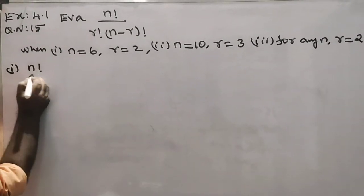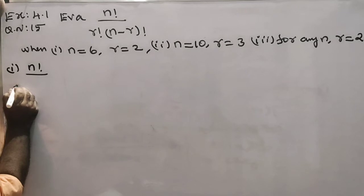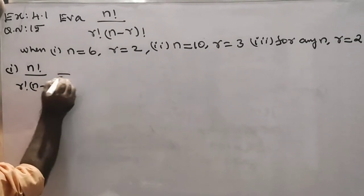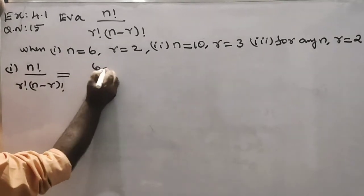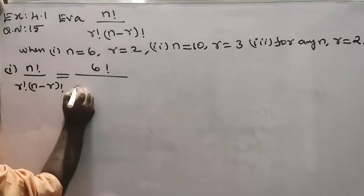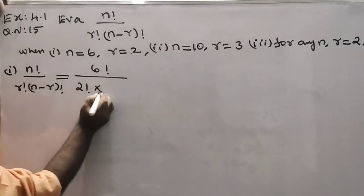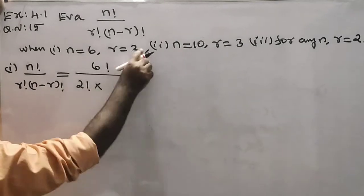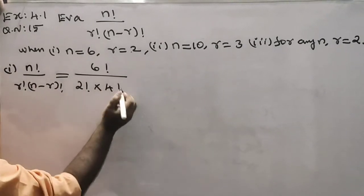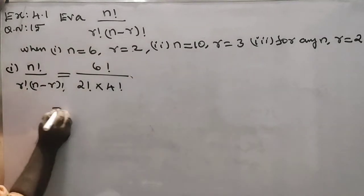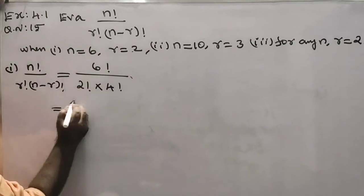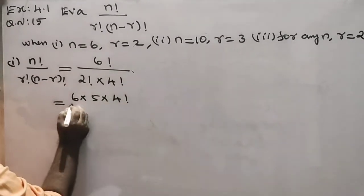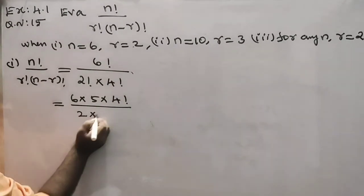n factorial divided by r factorial into n minus r factorial equals 6 factorial divided by 2 factorial into 6 minus 2, which is 4 factorial. Expanding: 6 into 5 into 4 factorial divided by 2 into 4 factorial.